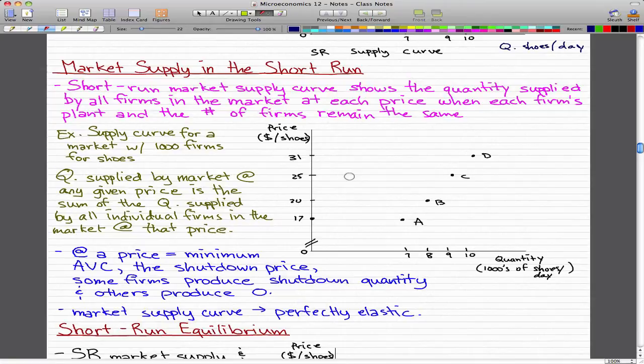The quantity supplied by the market at any given price is the sum of the quantity supplied by all the individual firms in the market at that price. The amount that the market supplies is made up of the quantity supplied by each individual firm that makes shoes in this case.